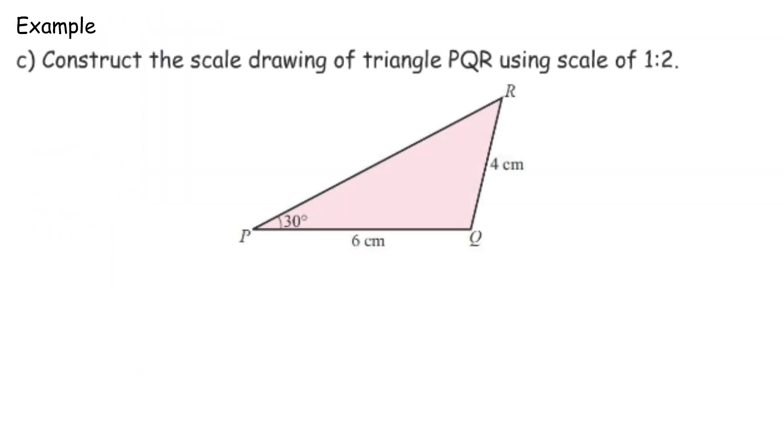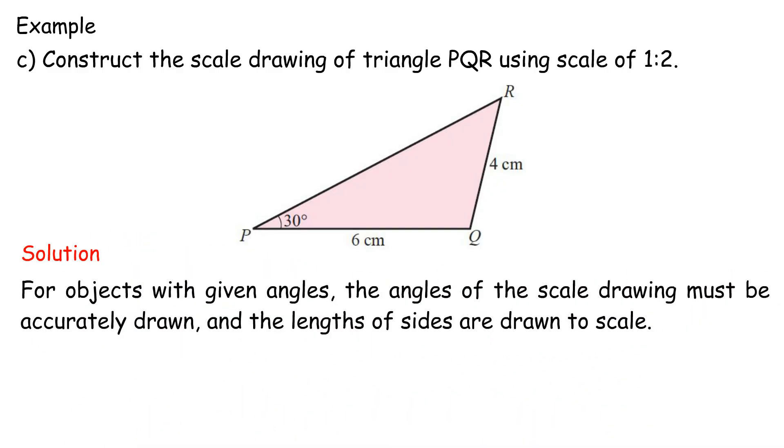Example C: Construct the scale drawing of triangle PQR using scale of 1 is to 2. For objects with given angles, the angles of the scale drawing must be accurately drawn, and the lengths of sides are drawn to scale.